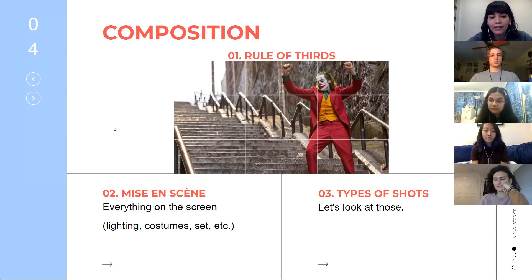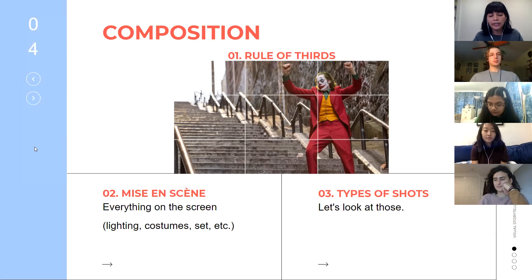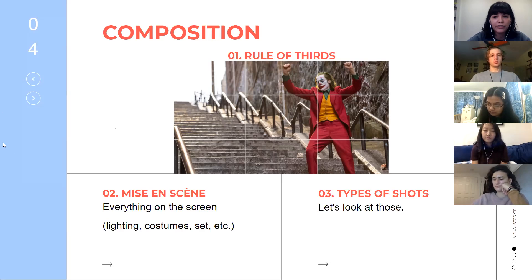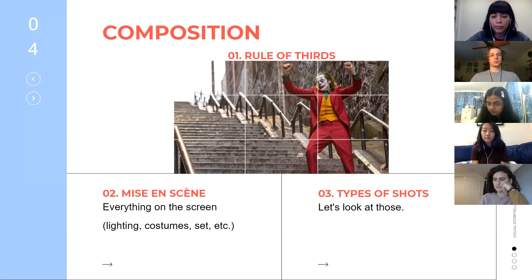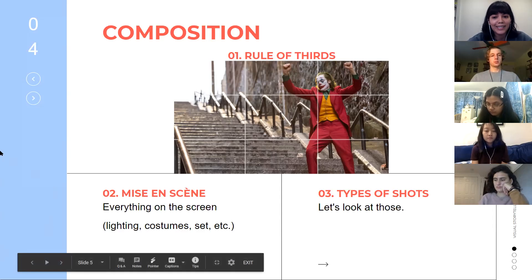Another important term is mise en scène, which literally means 'placed in the scene.' It refers to everything you see on screen: lighting, costumes, colors, actors, set — everything on screen is part of mise en scène. You could argue some sound is part of it too, but only if it's diegetic — meaning it comes from the world of the story. So if a character is listening to the radio and you can hear the music, that sound is diegetic and is part of the mise en scène.